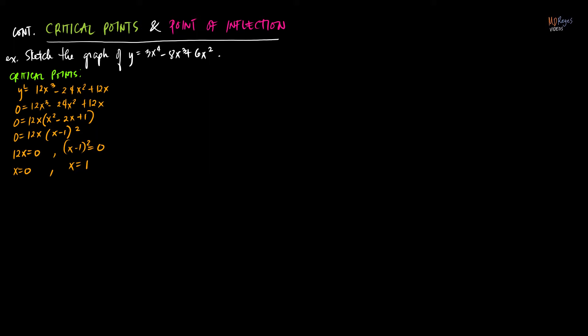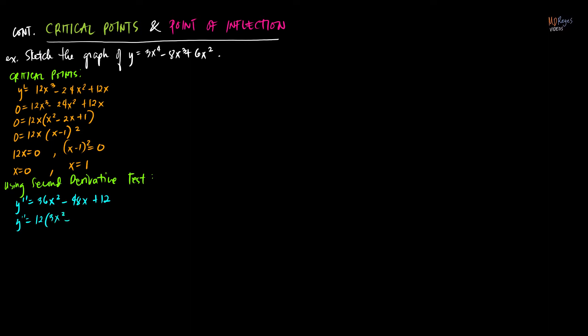We need to test whether these yield a maximum or minimum value, using the second derivative test if it permits. So we find the second derivative: y double prime is equal to 36x squared minus 48x plus 12. We need to find the sign of y double prime as x passes through 0 and 1. It's easier to factor: there's a common factor of 12, giving 12 times the quantity 3x squared minus 4x plus 1.